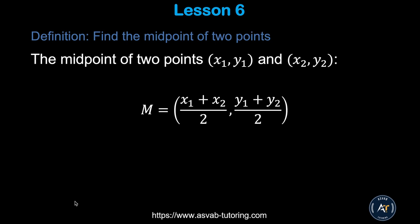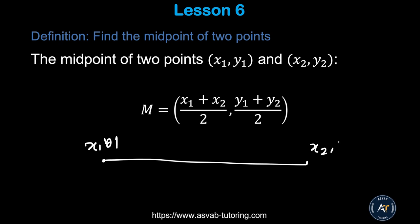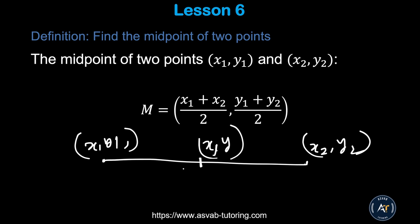Next we'll find the midpoint of two points. This type of problem comes up many times on the test. For points (x1, y1) and (x2, y2), the midpoint (x, y) is: x = (x1 + x2) / 2 and y = (y1 + y2) / 2. Let's apply this formula to a real problem.